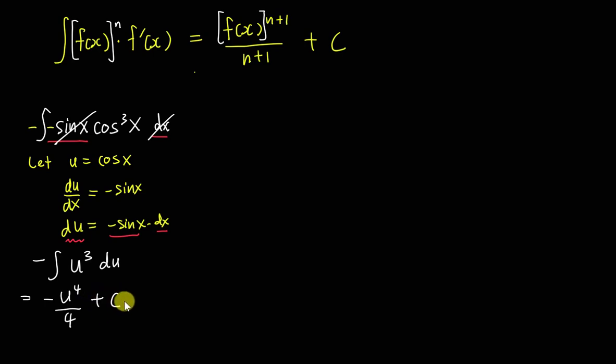Then you know what your u is. Your u is cos x. So you get your answer: negative cos to the power of 4 x over 4 plus C. This is how I would do it using the substitution method.